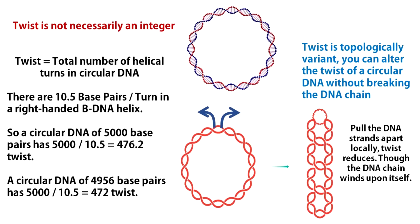But the double helix of the distant regions winds upon itself. Meaning, if you try to reduce the twist, the overall shape of the DNA molecule changes.